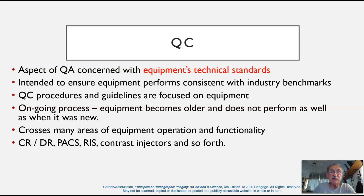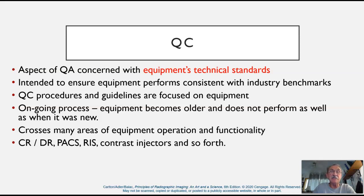This is an ongoing process as the equipment becomes older and does not perform as well as when it was new, so quality control helps us track that trend and recognize if our equipment is perhaps coming to the end of its useful life expectancy. Quality control covers computed radiography, direct digital radiography, our PACS system, radiology information system, contrast injectors, and so forth — all of the equipment falls under quality control.